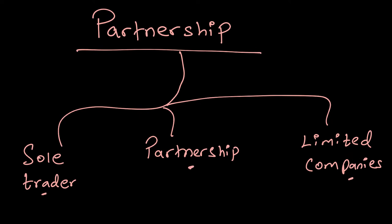A partnership can be an entity managed between 2 to 20 partners. A partnership is formed when partners gather together to form a business with the intention of making a profit. That's the aim of a partnership — it lies directly in the middle between a sole trader and limited companies.